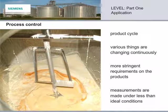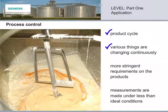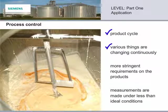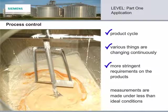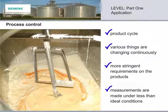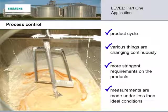Process control monitors a continuous product cycle where things are really happening — for example, cooking, the addition of different liquids, and even vigorous blending. Levels often change rapidly, so devices have more stringent requirements. Measurements are frequently under less than ideal conditions, including very high temperature or pressure, and there may be agitation or even a chemical reaction.